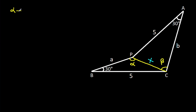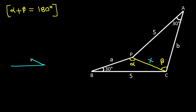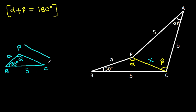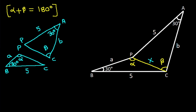We have alpha plus beta equals 180 degrees. Now we have two triangles: triangle BCP, where angle CBP is 30 degrees, angle BCP is alpha, BP is A, BC is 5; and triangle ACP, where AP is 5, AC is B, angle CAP is 30 degrees, angle ACP is beta.